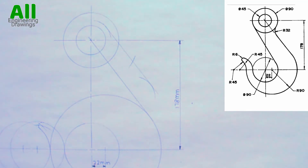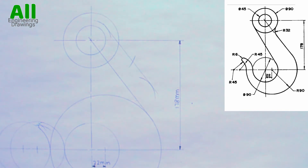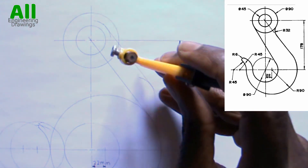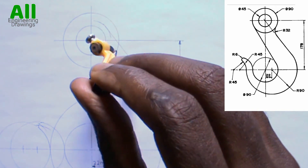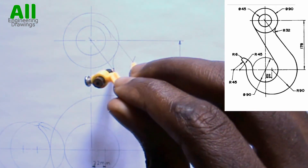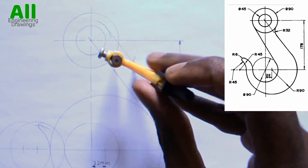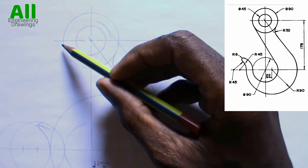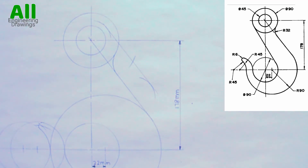The tangential arc is 32mm. With a radius of 32mm I will place my compass on the point where the arc intersects the parallel line, then I will produce the tangential arc. There is also a tangential line on this point, so I will draw it.